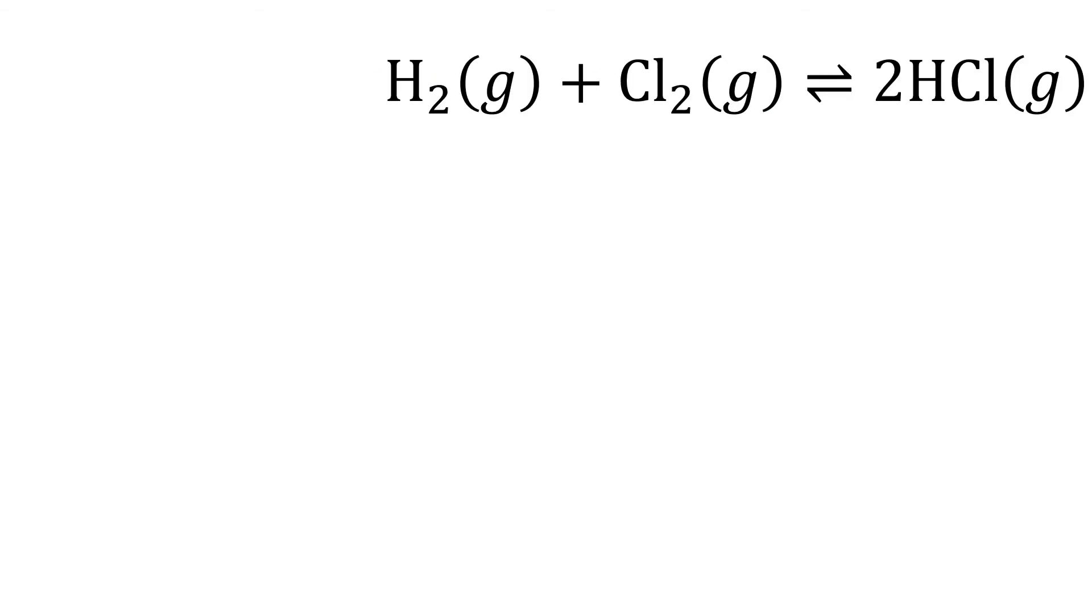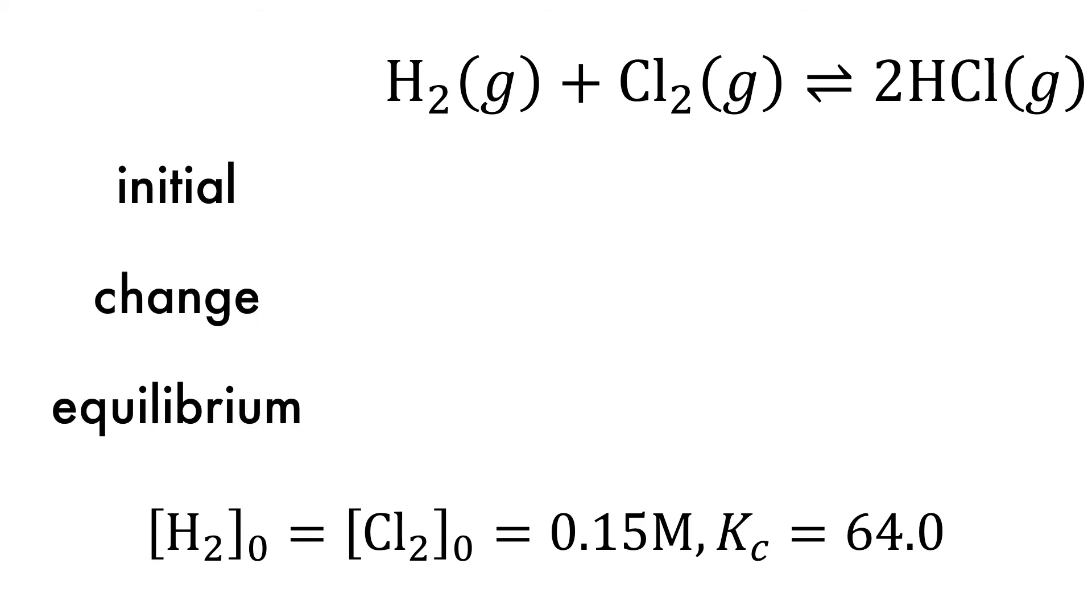Let's work on a more challenging ICE box and calculate the equilibrium concentrations of each substance in the following reaction in terms of molarity, which is moles per liter. The initial concentrations of the reactants are 0.15 moles per liter and Kc is equal to 64. The first thing is to set up the ICE box. The initial concentration of the reactants is 0.15 moles per liter and the concentration of the product will initially be 0.